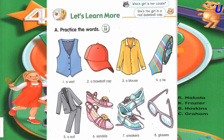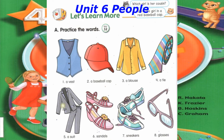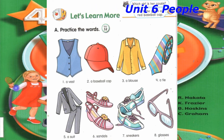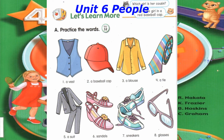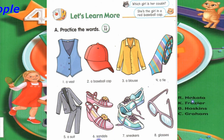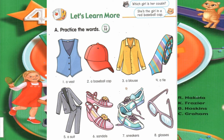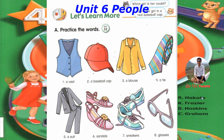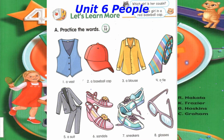Track 32, Let's Learn More A. Practice the words. Number 1: A vest. Number 2: A baseball cap. Number 3: A blouse. Number 4: A tie. Number 5: A suit. Number 6: Sandals. Number 7: Sneakers. Number 8: Glasses.